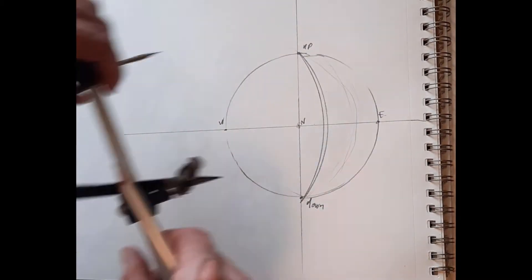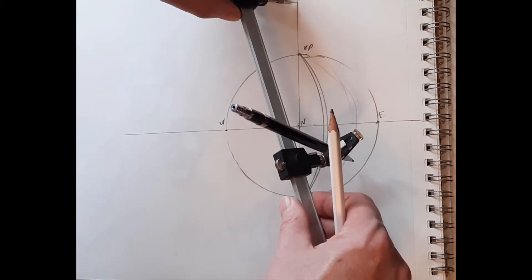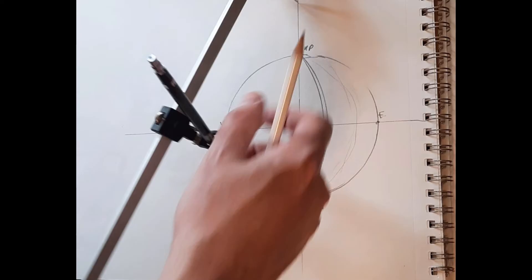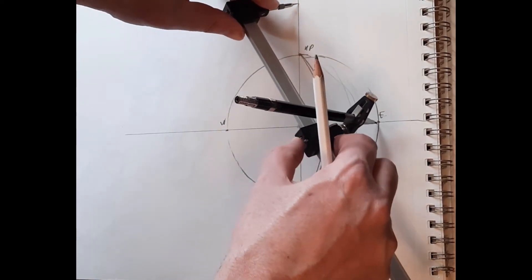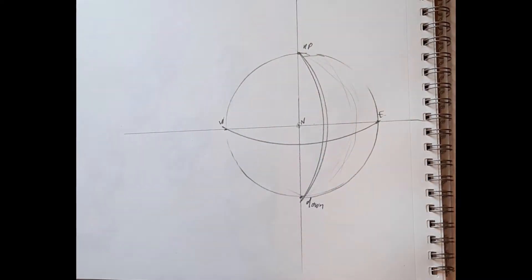If we want to draw a line from east to west, it's the same setup. We put the foot of our compass on the line between up and down, and the drawing tip on east, and it'll make an arc from east to west.